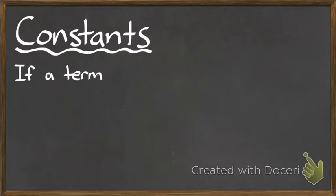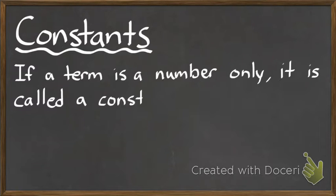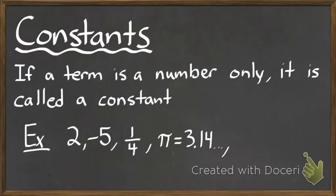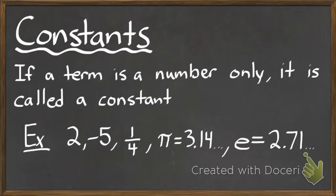What is a constant? If a term is just a number only — so you don't see any variables — it is called a constant. For example, just any plain number like 2, negative 5, a quarter, or a decimal — these are all constants. There are also some special constants like pi (3.14 and so on), which is used when dealing with circles, areas, and volumes. And the constant e (2.71 and so on) is seen a lot when dealing with interest, compounding, and exponential growth.